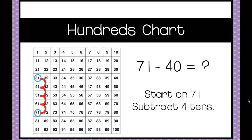In this example, 71 minus 40, we start on 71 and we subtract 4 tens because there's a 4 in the tens place. Start on 71, subtract 1, 2, 3, 4 tens. And the answer is 31.